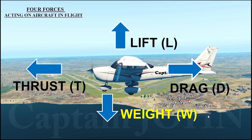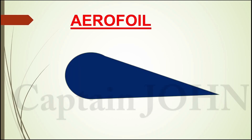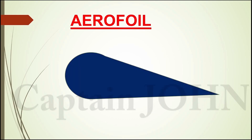Everything moving through the air — including airplanes, rockets, and birds — is affected by aerodynamics. First of all, let's understand what an airfoil is. It's called an airfoil in American English. In modern airplanes, not only wings but also all other sections or parts that affect lift, drag, thrust, and weight forces are called airfoils.